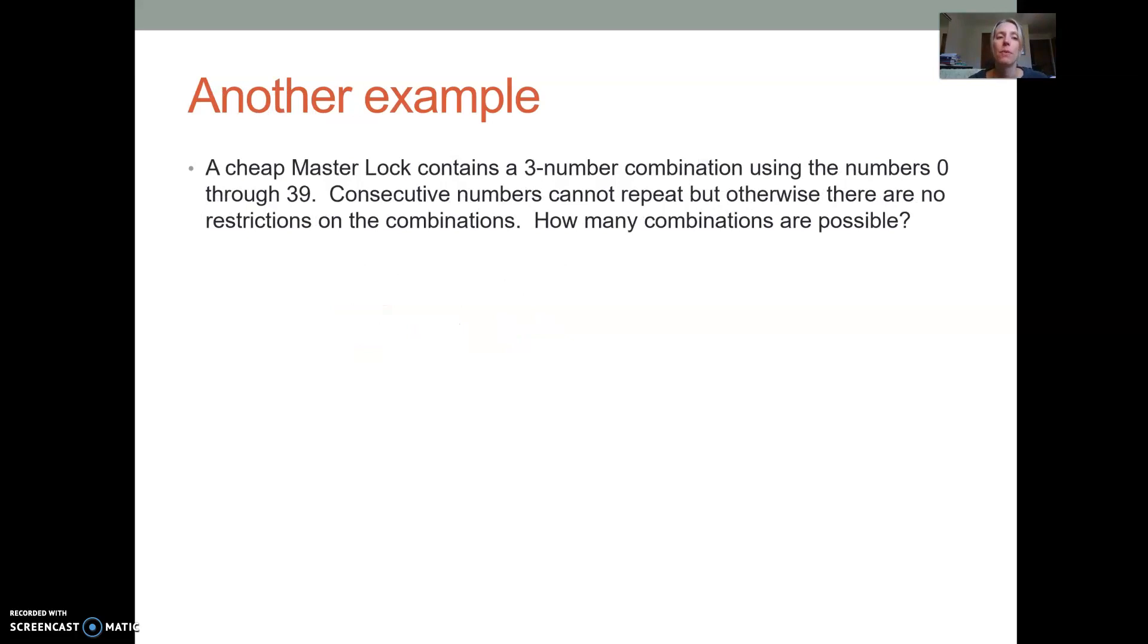In another example, so if you have a cheap master lock, one way in which they're made is they have a three-digit combination. And the three-digit combination uses the numbers zero through 39. For master locks, consecutive numbers cannot repeat, but otherwise there are no restrictions. So this might be a good time to talk about restrictions. Sometimes when things are dependent on the previous thing, so the second thing to happen is dependent on the first thing to happen, we might have restrictions on what that second thing can be. And so with this master lock, it's saying there is a restriction because consecutive numbers cannot repeat.